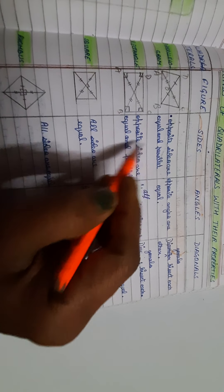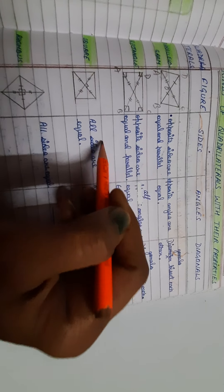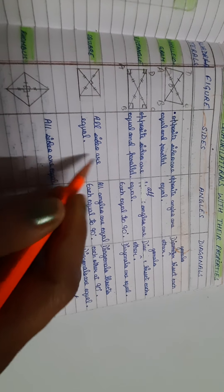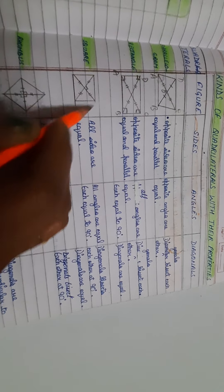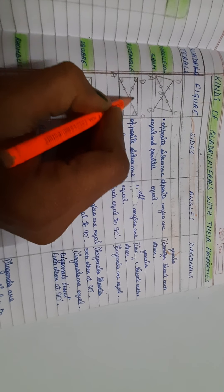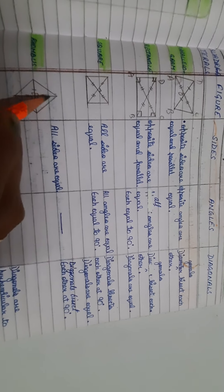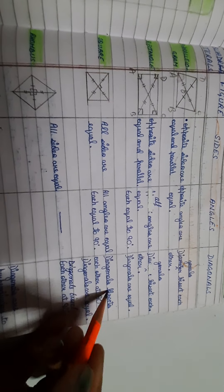The third quadrilateral is a square, in which all sides are equal — same as a rhombus. So parallelogram and rectangle share one type of side property, while square and rhombus share another: all sides are equal. For angles in a square: all angles are equal, each equal to 90 degrees, matching the rectangle's property. For diagonals in a square: they bisect each other at 90 degrees and they are also equal. For a rhombus: all sides are equal, no specific comment about angles, but the diagonals bisect each other at 90 degrees — matching the square's diagonal property, except that in a square the diagonals are also equal.